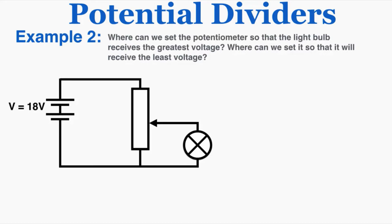The second example uses a potentiometer, and these questions don't get too complicated. The question asks: where can we set the potentiometer so that the light bulb receives the greatest voltage, and where for the least voltage? The place where the light bulb experiences the greatest voltage is where it is in parallel with the full potentiometer, because then both the potentiometer and the light bulb receive the full 18 volts. In any series arrangement they would split the voltage. So we place the connection at the very top so the current can go either through the full potentiometer or through the light bulb — they are perfectly in parallel.